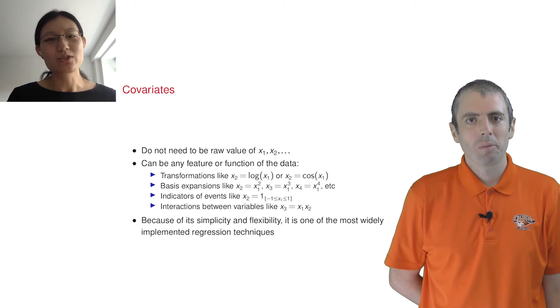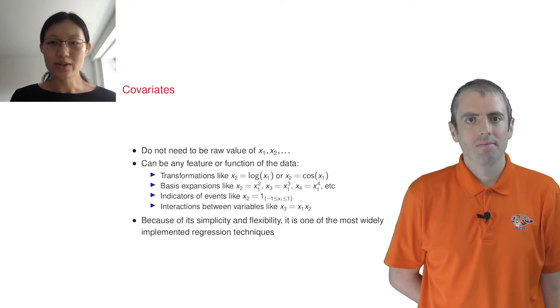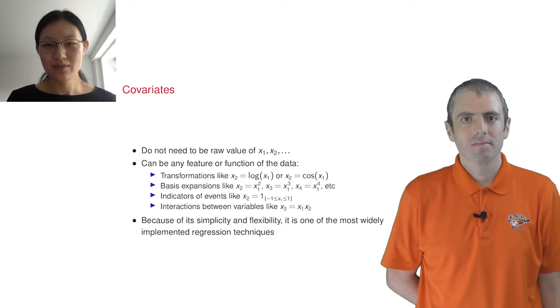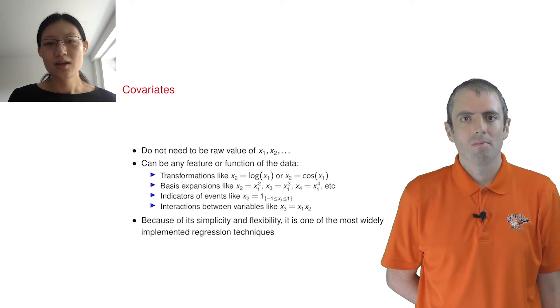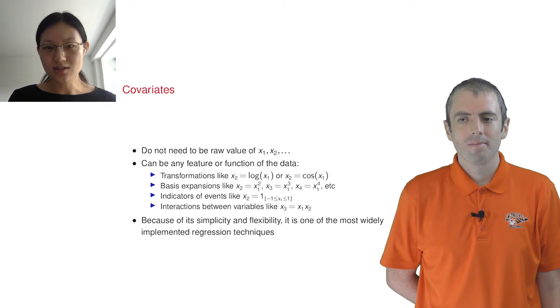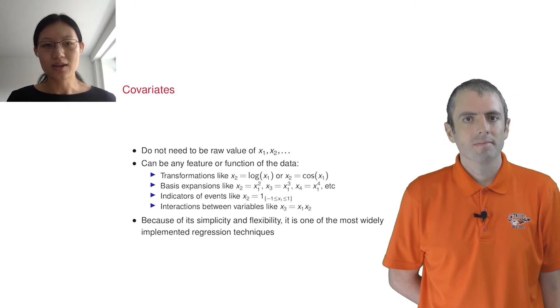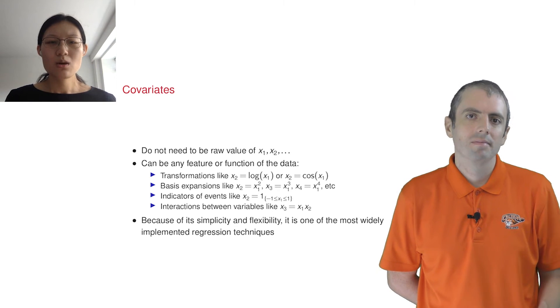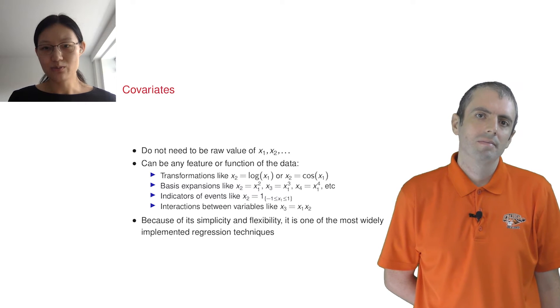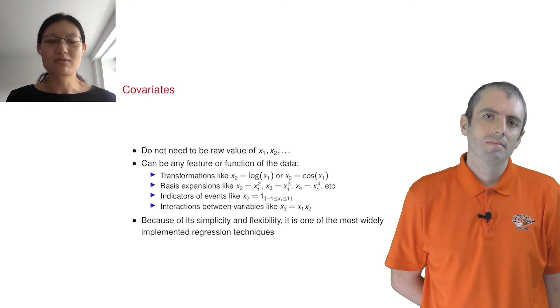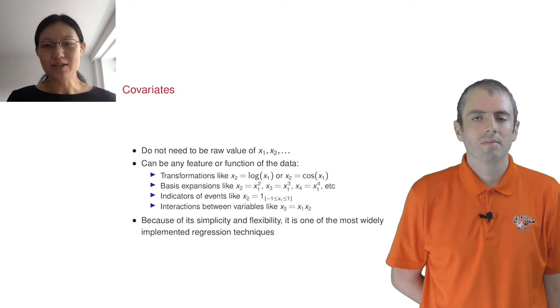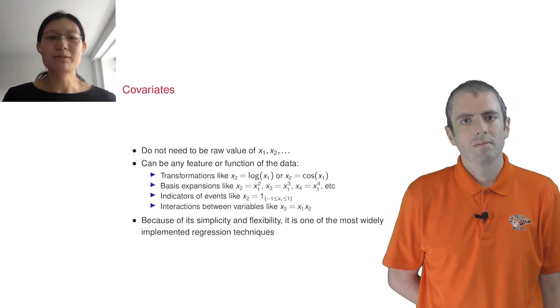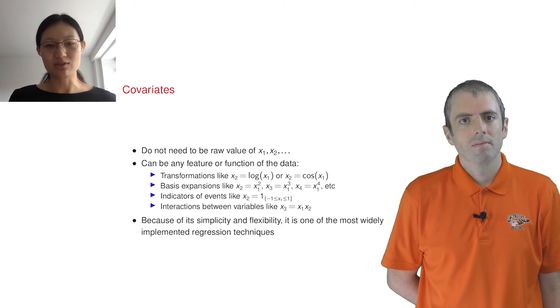But normally, we don't just have two dimensions. You can do things like feature engineering on regression inputs. You can transform your data, take the log, multiply things by themselves. You can have indicators that just say, does the value fall within a range? You can have interactions. So you can do lots and lots of stuff with the input to create new ways of encoding your data. Because of its simplicity and flexibility, this is one of the most widely implemented ways of analyzing continuous data.